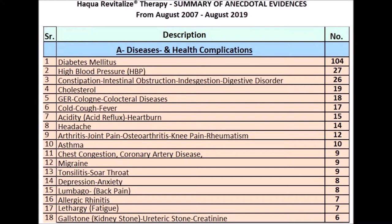6. Cold, cough and fever: 17 people. 7. Acidity, acid reflux, heartburn: 15 people. 8. Headache: 14 people. 9. Arthritis, joint pain, osteoarthritis, knee pain and rheumatism: 12 people. 10. Asthma: 10 people. 11. Chest congestion, coronary artery disease: several people.